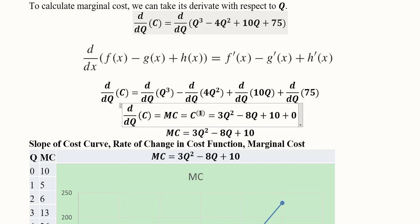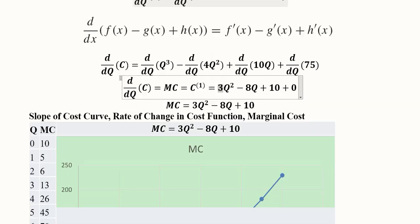Right now we are interested in marginal cost function only and here we have the result of it. Q³ when differentiated becomes 3Q², 4Q² becomes 8Q and 10Q becomes 10 and 75 reduces to 0.